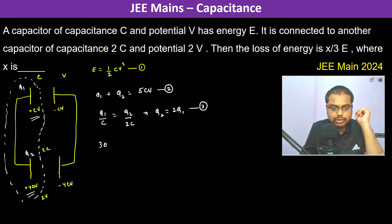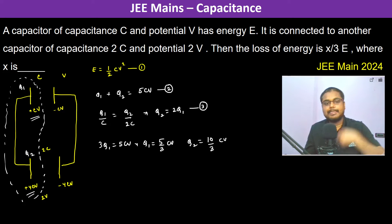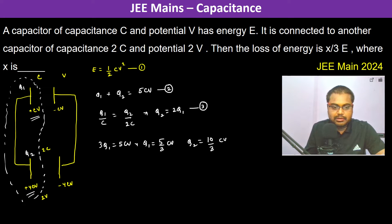Solving: 3q1 equals 5CV, so q1 equals 5CV/3. Therefore q2 equals 2q1, which gives q2 equals 10CV/3.